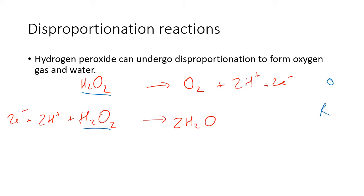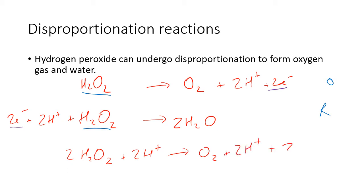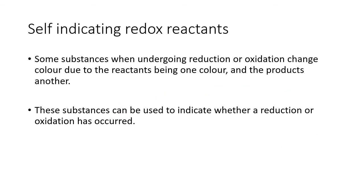When you combine these, you notice they both gain or lose two electrons, so we don't need to multiply anything. You combine them to form: 2H₂O₂ + 2H⁺ → O₂ + 2H⁺ + 2H₂O. You notice the hydrogen ions cancel out, and that's what you end up with as the disproportionation reaction: 2H₂O₂ → O₂ + 2H₂O.